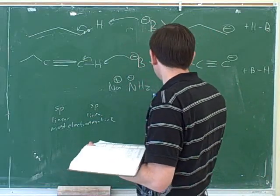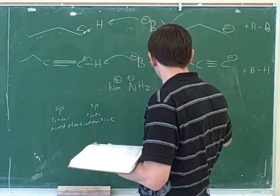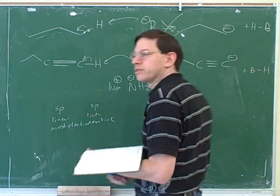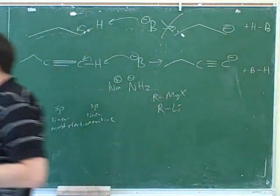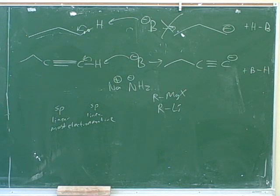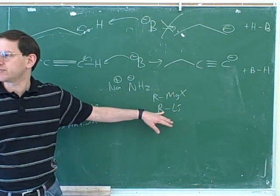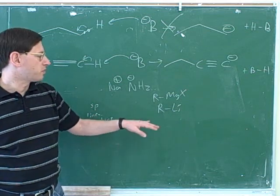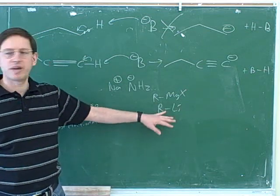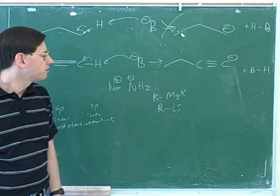You can do this with a Grignard or an alkyllithium. We talked in the past about how Grignards and alkyllithiums could act like either bases or nucleophiles. This is why you have to keep these away from protic solvents — they would otherwise act like a base and take away the proton from the protic solvent.